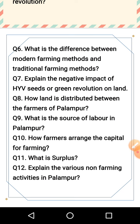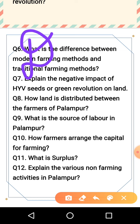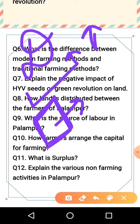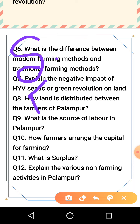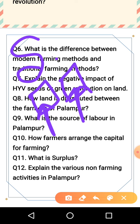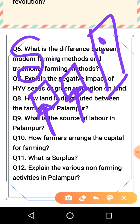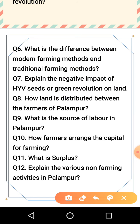Next: explain the various non-farming activities in Palampur. The very first is dairy — most people keep animals for dairy purposes. Another example is a computer center that is running in Palampur. Next is transport — transport as a means of employment and livelihood is another non-farming activity in Palampur.